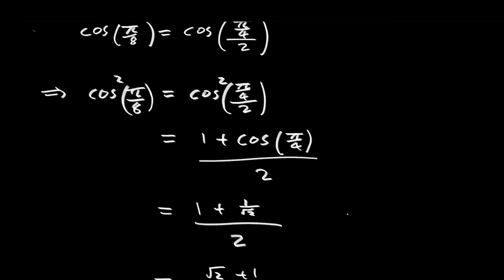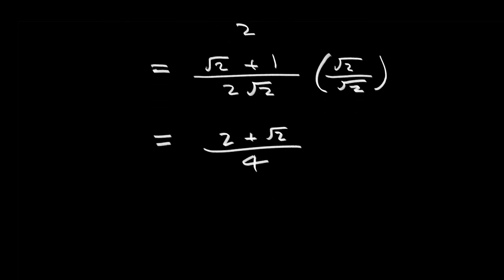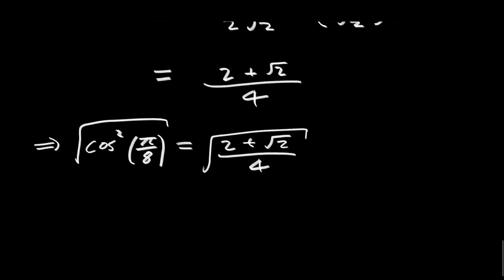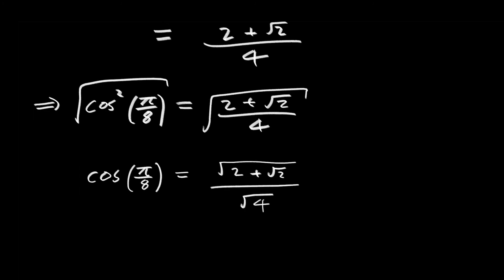Remember, what we really had was a square on the left-hand side of the equation. So this is not yet the exact value for the cosine of π over 8. In order to get the exact value, we take the square root of both sides. On the left-hand side, we undo the square and are left with the cosine of π over 8. When we take the square root of the fraction, that's the square root of the numerator over the square root of the denominator, and the square root of 4 is just 2. So the cosine of π over 8 equals the square root of 2 plus the square root of 2, all over 2. This is an exact value for the cosine of π over 8, even though π over 8 is not one of our special angles.